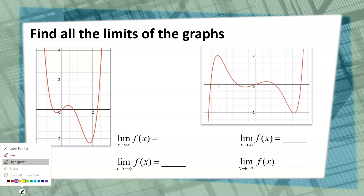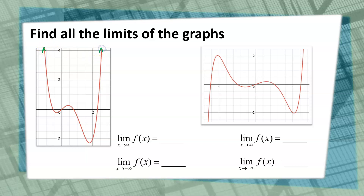Let's look at these first graphs. Remember, the arrows at the end of the lines mean the graph continues in that direction. As x is approaching infinity — looking along the x-axis going to the right — we can see that the y-values are going higher and higher, approaching positive infinity. Then as x approaches negative infinity, which is this direction, the y-values are also going up and up and up, also approaching positive infinity.